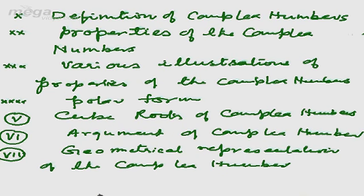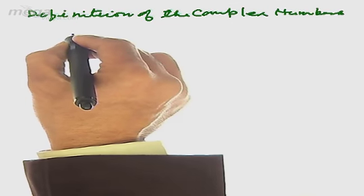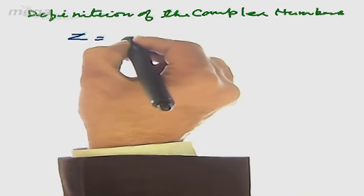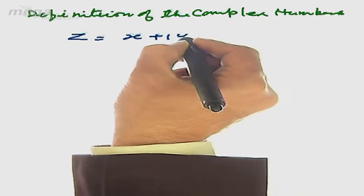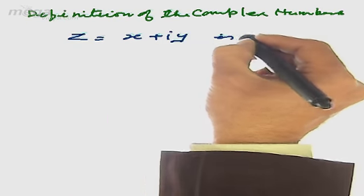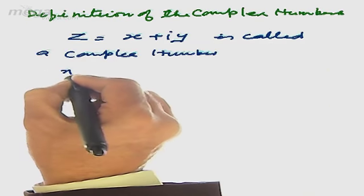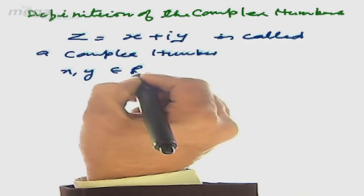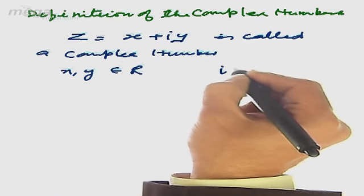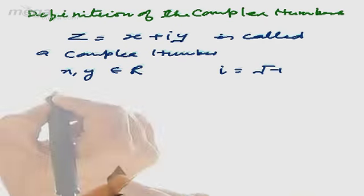Initially we will take up the definition of the complex number. Any number of the type z = x + iy is called a complex number, where x and y both belong to real numbers and i stands for the square root of minus 1. This is called iota.